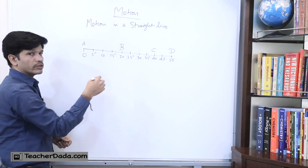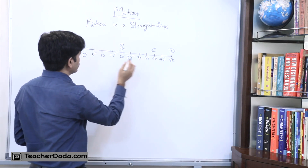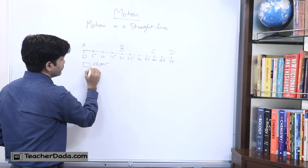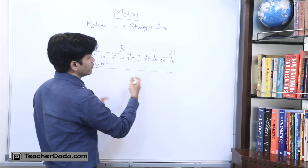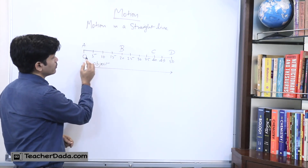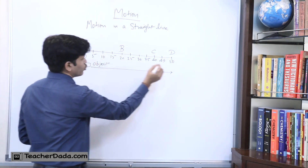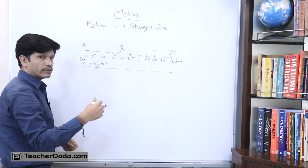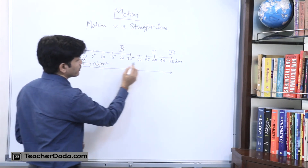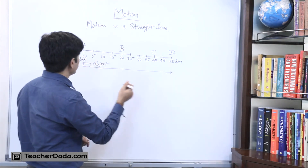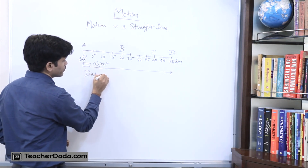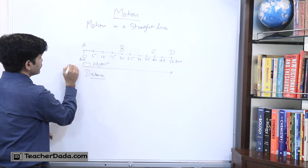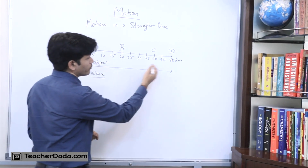Suppose there is an object X which is moving from point A till point D. It is moving from one position to another. These are the distances in kilometres, so we have written from 0 kilometres till 50 kilometres, and the object travels this in a certain time. So from 0 kilometres it starts and it will cover 50 kilometres. The distance covered by object X is 50 kilometres.